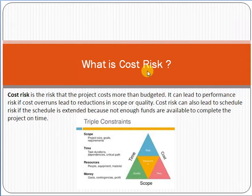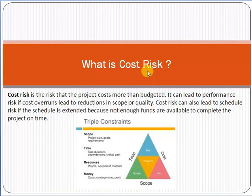Coming back to our main topic — what is cost risk? Cost risk is the risk that the project costs more than budgeted. It can lead to performance risk if cost overruns lead to a reduction in scope or quality. Cost risk can also lead to schedule risk if the schedule is extended because not enough funds are available to complete the project on time. For example, say you are assigned to implement an e-commerce solution for a company with a total budget of $5,000.